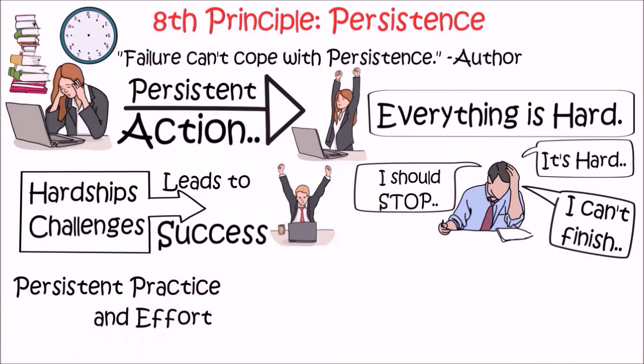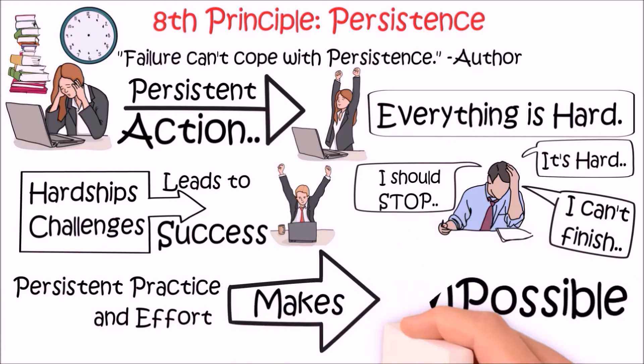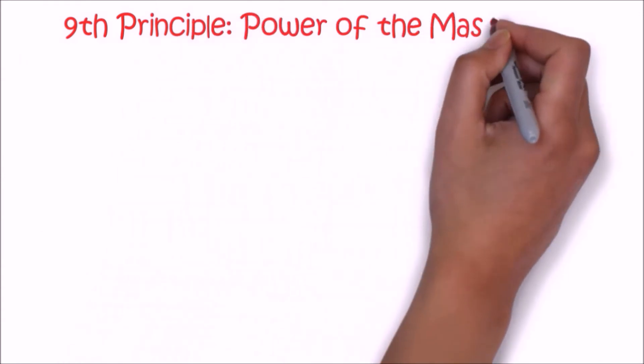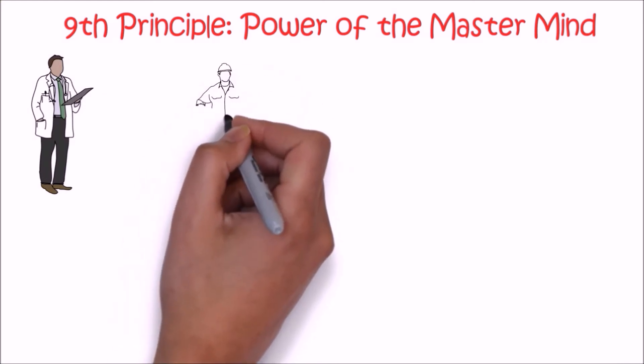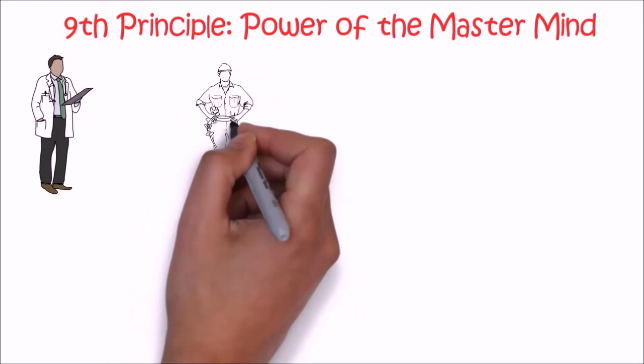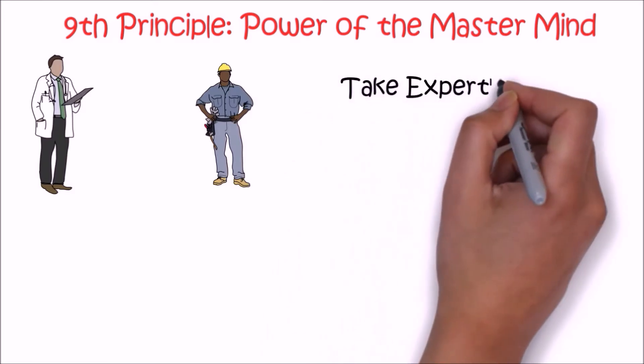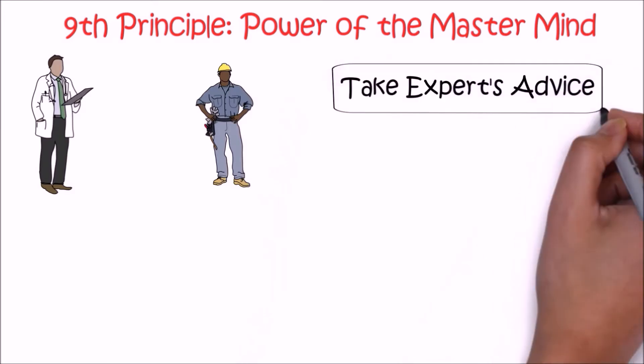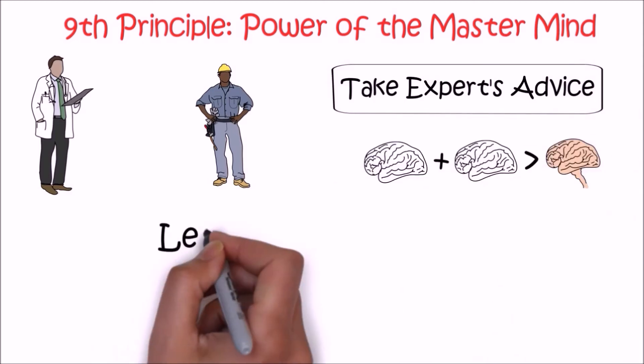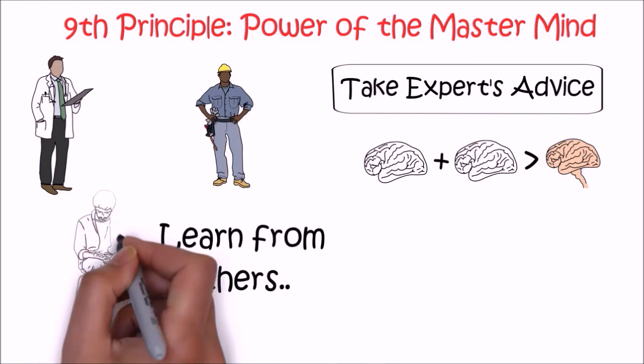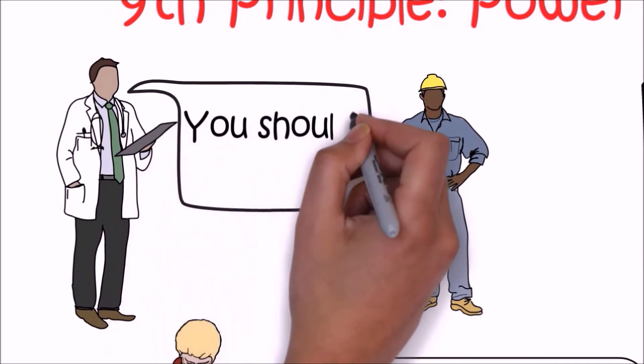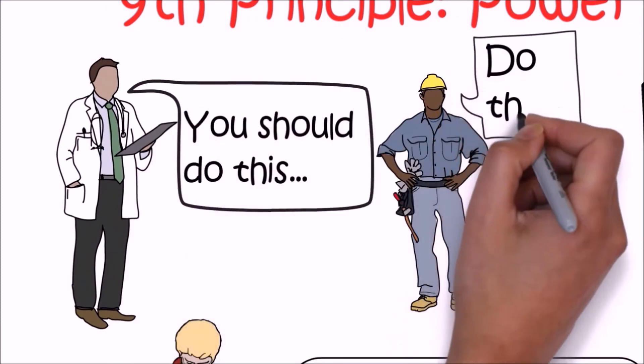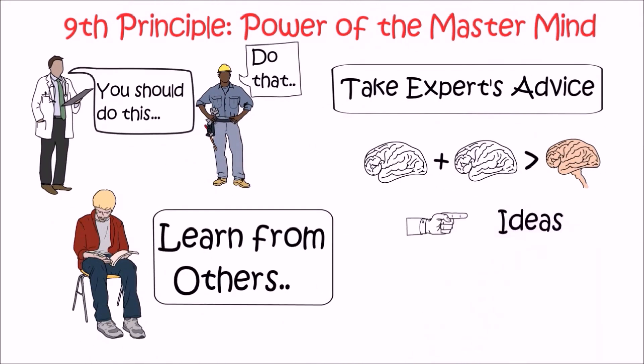The ninth principle is power of the mastermind. When we have some kind of illness, we go to a doctor. When our appliances break, we go to a technician. Similarly, when we have a problem that we can't solve ourselves, we shouldn't hesitate to take the advice of experts. You see, two brains are better than one. It's not possible to learn about everything or get specialized in every field or experience mistakes which can be easily avoided. This is where the use of mastermind groups comes into play. This group can provide us with valuable ideas and information needed and can even help us to get motivated and accountable.